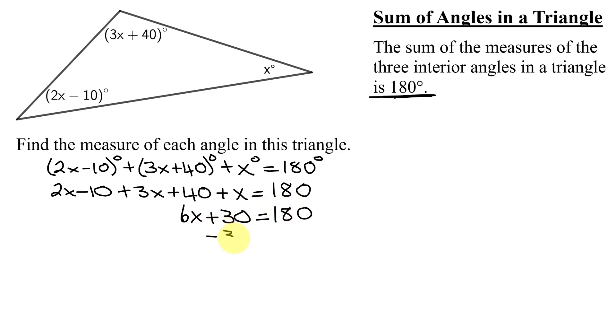Now, to get x by itself, the first thing I'm going to have to do is subtract 30 from both sides. So 6x equals 180 minus 30 is 150. Divide both sides by 6. These 6's reduce. I get x equals 150 divided by 6 is 25. So I found the value of x.